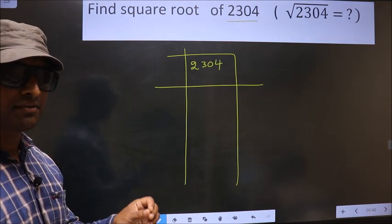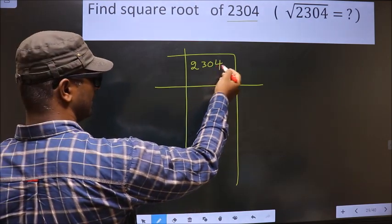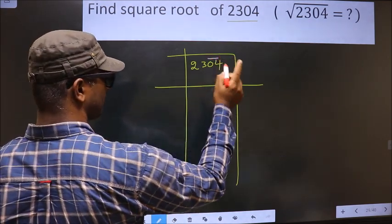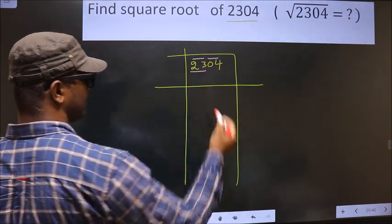Now we should divide the given number into pairs, starting from this side. These 2 numbers, 1 pair and these 2 numbers, another pair. Here we have 23.